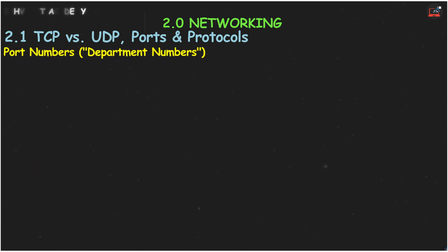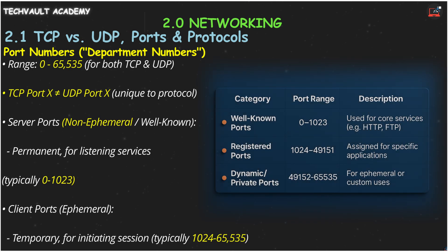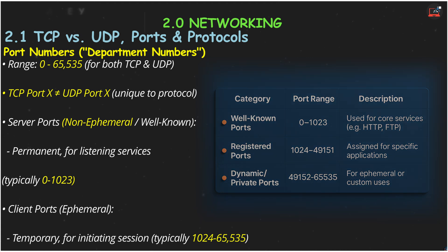About those port numbers — the department numbers inside the building — they range from 0 to 65,535 for both TCP and UDP, and TCP port 80 is different from UDP port 80. Server port numbers, or non-ephemeral ports, are the well-known permanent extensions for services that are always listening, typically from 0 to 1023. Client port numbers, or ephemeral ports, are temporary numbers your computer uses for a specific session when initiating a connection, usually from 1024 to 65,535.